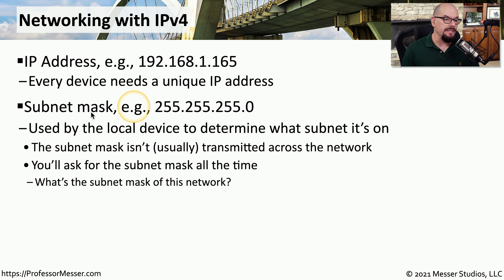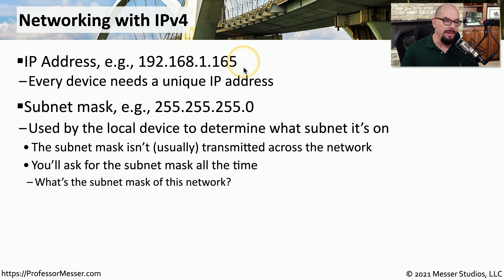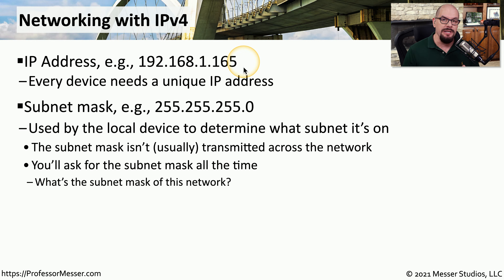The second important configuration setting is the subnet mask. This commonly looks like 255.255.255.0, or some other combination of numbers that makes up the subnet mask. This number is used in conjunction with your IP address so that your device understands what IP subnet it lives on. This is important when routing outside of your local IP subnet and sending information to a default gateway. If your computer doesn't know what subnet it's on, it doesn't know what information should be communicated locally versus sent to your default gateway. So we configure our subnet mask so that your device knows exactly where data should be sent.